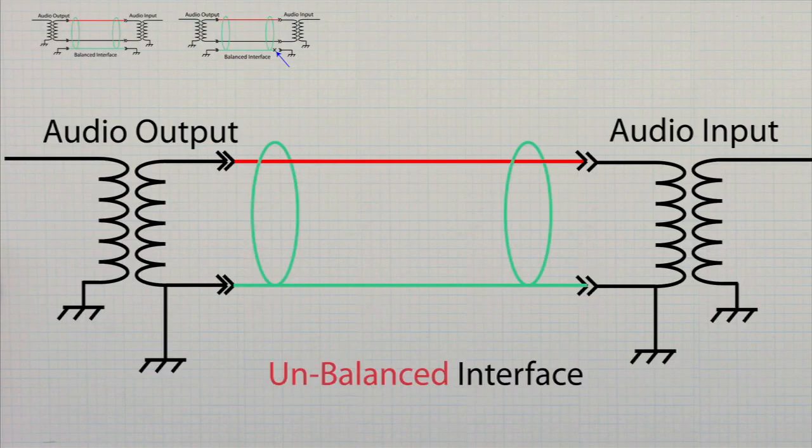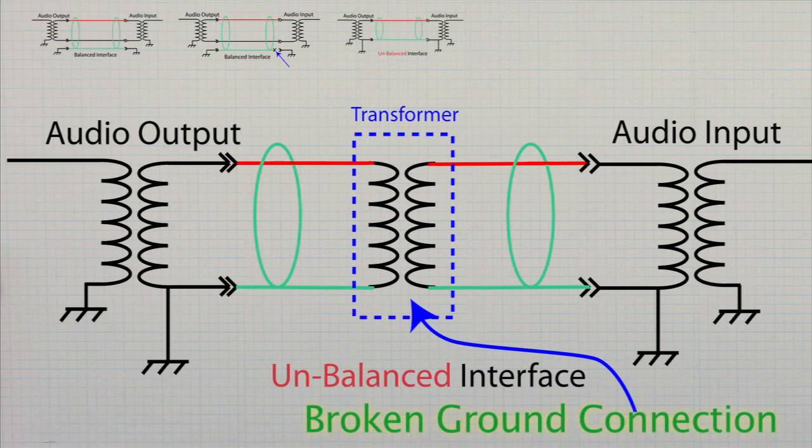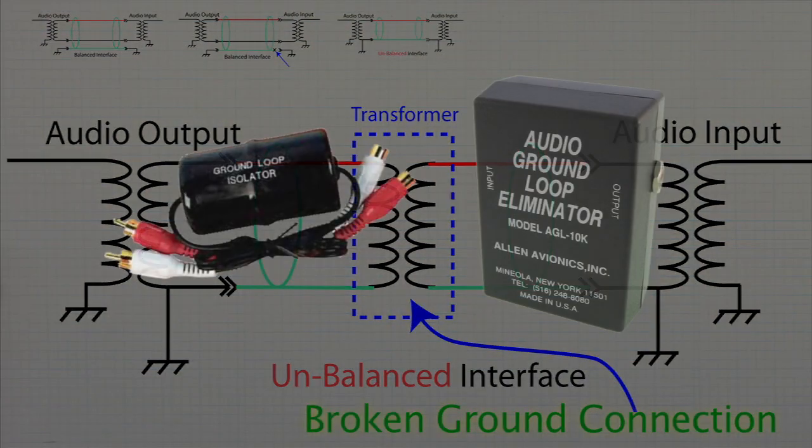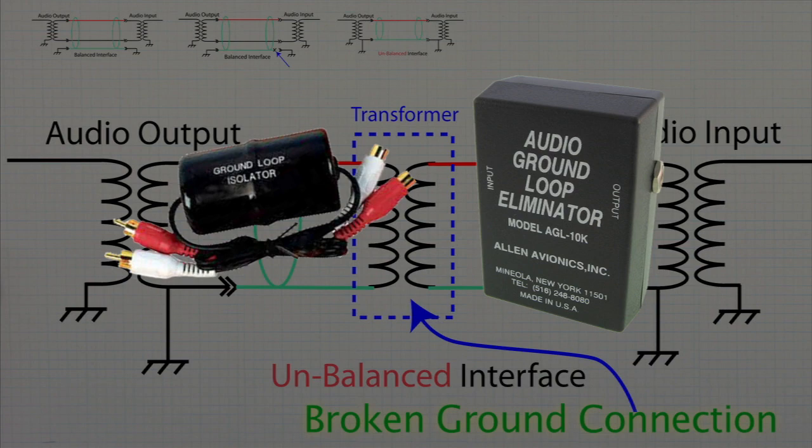But for unbalanced connections, there is only one way to overcome a ground loop. And that is by the use of transformers. The transformer eliminates the path for the ground loop. Here are a couple of examples of audio transformers for unbalanced audio.